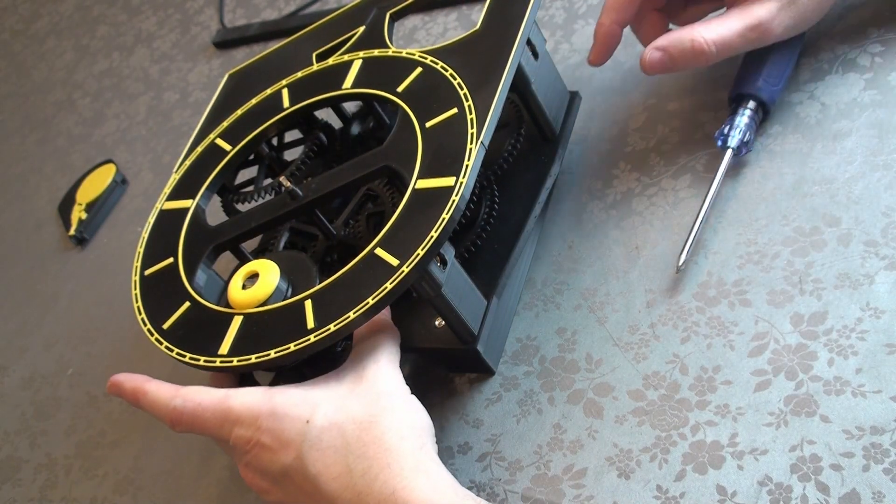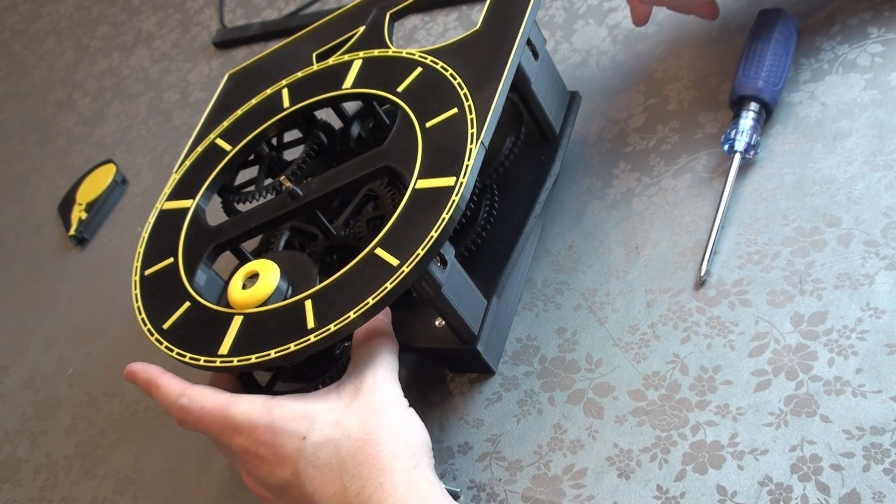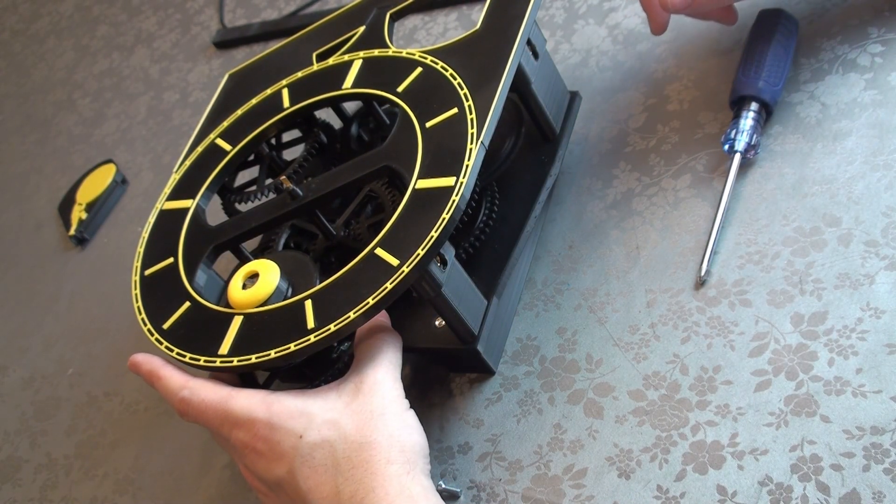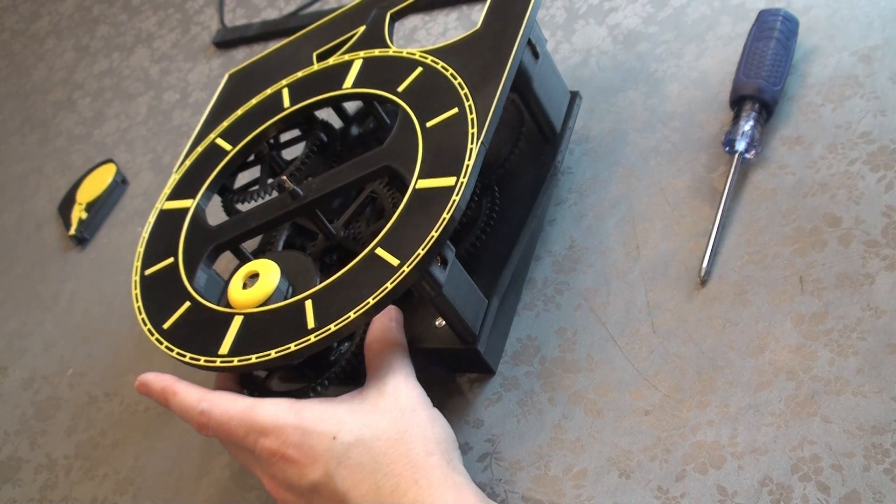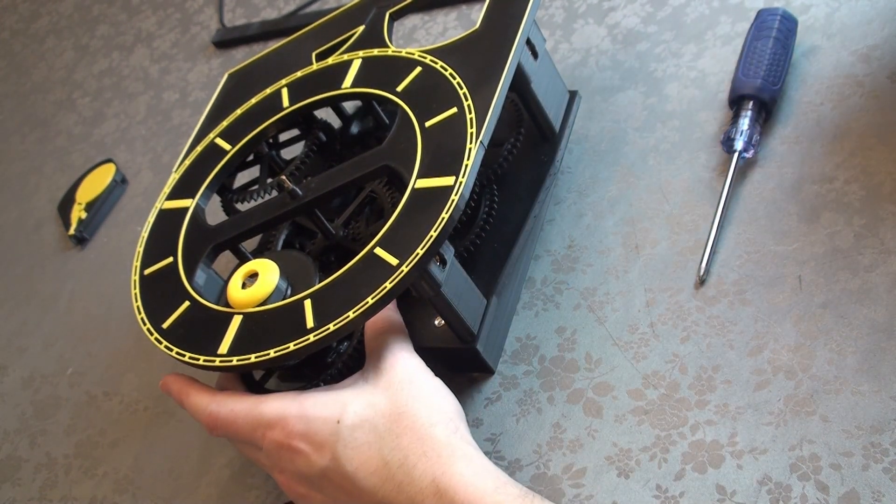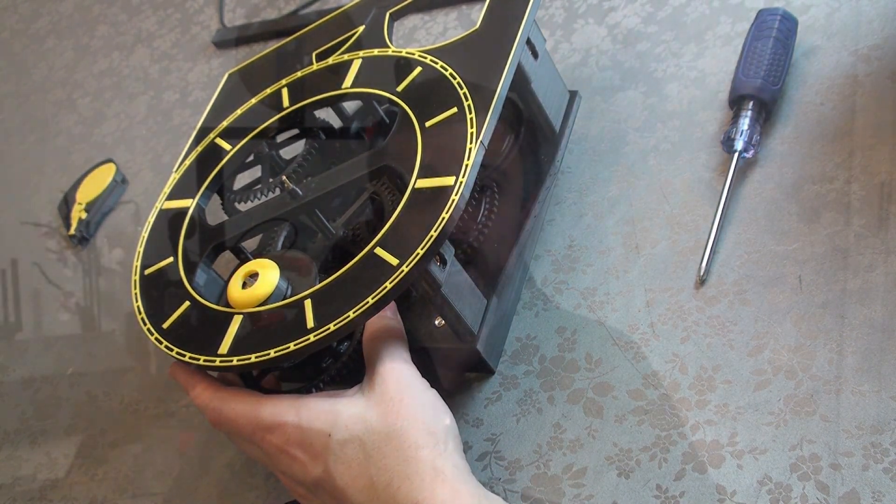Because of the size of these, there isn't enough play in the axles to put them on separately. You just have to put them on at the same time, lined up as described. Once all the gears are in place, I test fit the face just to make sure the gears all spin.